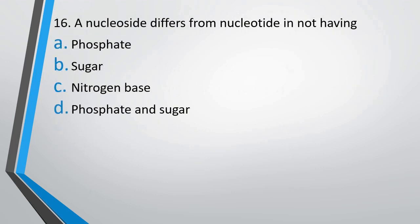Question number 16. A nucleoside differs from a nucleotide in not having: (A) phosphate, (B) sugar, (C) nitrogen base, or (D) phosphate and sugar. The correct answer is option A — phosphate.